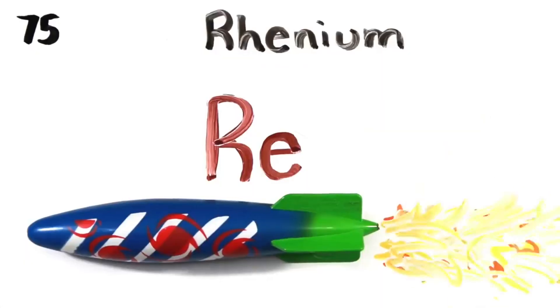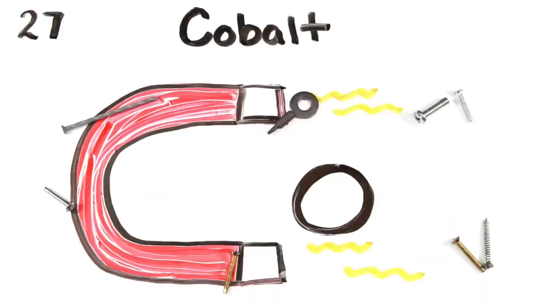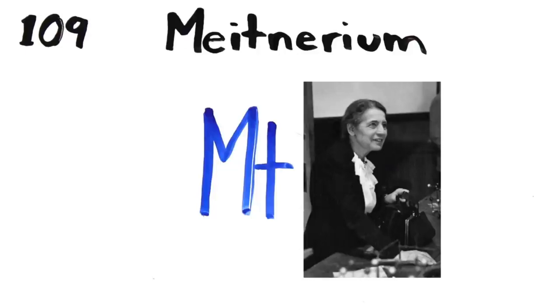Technetium, Rhenium, Bohrium, Iron is the 26th, Ruthenium, Osmium, Hassium, Cobalt, Rhodium, Iridium, Platinum, The Nickel coins you get,